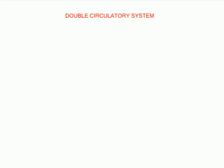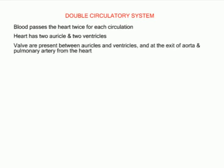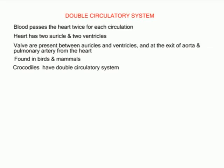In the double circulatory system, blood passes through the heart twice in a complete circulation. The heart has two auricles and two ventricles. Valves are found between the auricles and ventricles and at the exit of the aorta and pulmonary arteries. The double circulatory system is found in birds and mammals. Crocodiles also have a double circulatory system. Other reptiles and amphibians have double circulatory systems but the ventricle is not fully divided, so the efficiency of gaseous exchange is reduced due to mixing of oxygenated and deoxygenated blood.